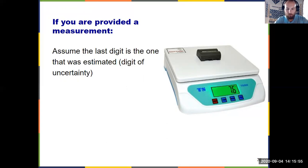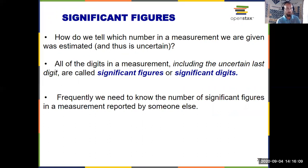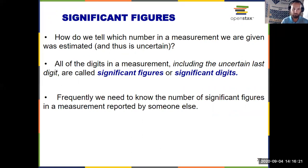That brings us to significant figures. How do we tell which digit was estimated — which one was uncertain? Everything that is in a number, including that last estimated digit of uncertainty, represents a significant figure — also called significant digits, or sig figs for short. A key part of chemistry, especially early in the semester, is determining the number of significant figures in a given measurement.